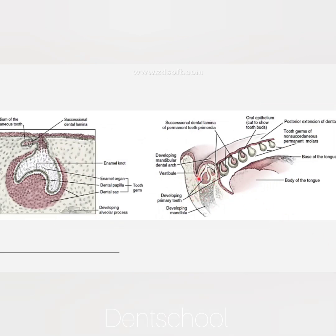First of all, lingual to the dental lamina we have the developing tongue, and buccal to the dental lamina we have the buccal vestibule or oral vestibule.